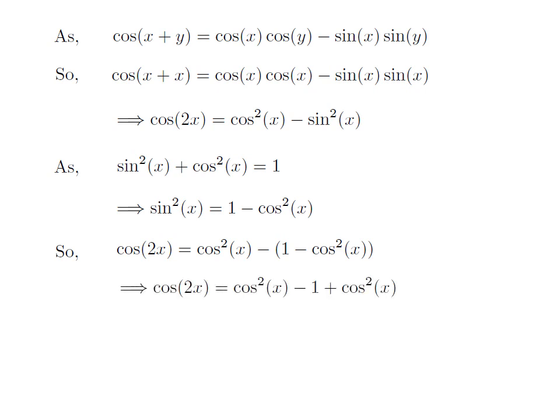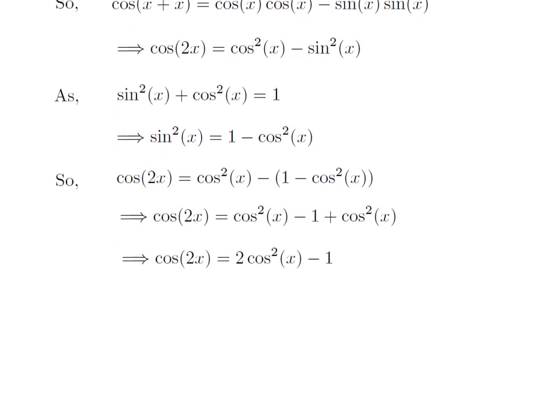So I got cosine of 2x is equal to square of cosine of x minus of 1 minus square of cosine of x. Simple arithmetic gives us cosine of 2x is equal to 2 times square of cosine of x minus 1. This is the second identity for cosine of 2x.